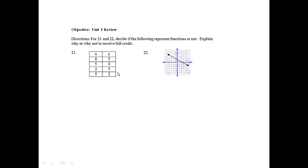Okay, so on 21 I'm going to be looking at the inputs and the outputs, and I notice that if I have 5, 0, and 5, 2, the input of 5 has 2 outputs, and that is not allowed. So I'm going to put no, 5 has 2 outputs, and every input is only allowed to have 1 output.